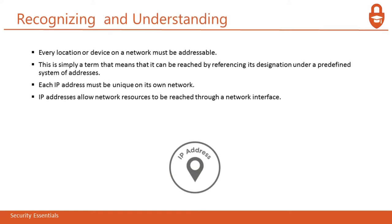Every location or device on a network must be addressable by using an IP address — meaning it can be reached by referencing its designation under a predefined system of addresses. Each IP address must be unique on its own network. If computers have the same IP address, communication becomes impossible, as there would be no way of knowing where to forward the request. An IP address allows network resources to be reached through a network interface.